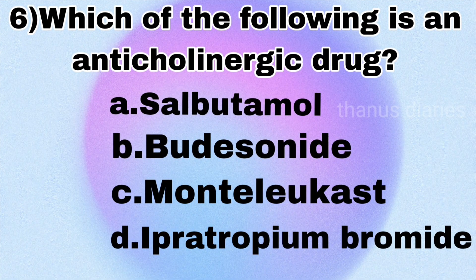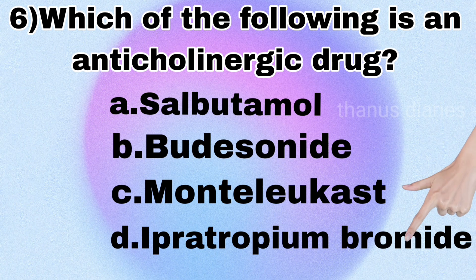Next question: which of the following is an anti-cholinergic drug? — Salbutamol, budesonide, montelukast, or ipratropium bromide? The answer is ipratropium bromide.